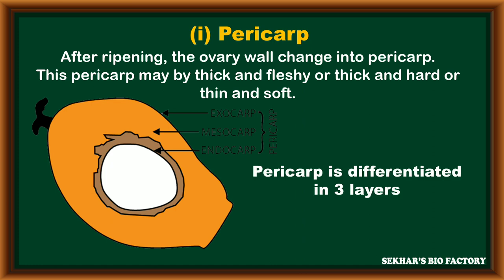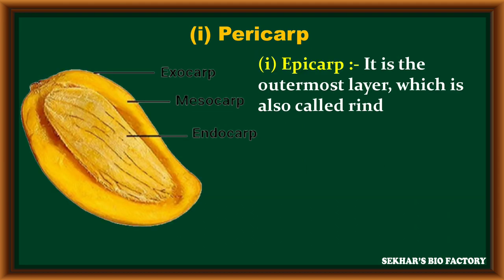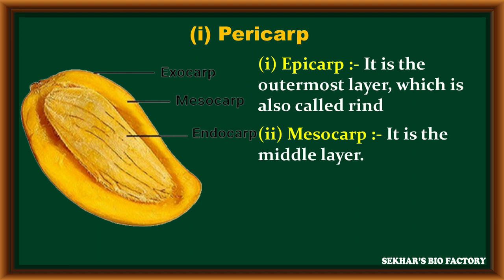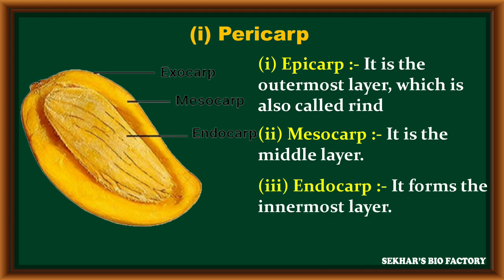The pericarp is differentiated into three layers in most plants. The outermost layer is called epicarp or exocarp — it is the outermost layer in the fruit wall, also called rind. The second layer is mesocarp, present between the exocarp and endocarp. The third and innermost layer is endocarp.